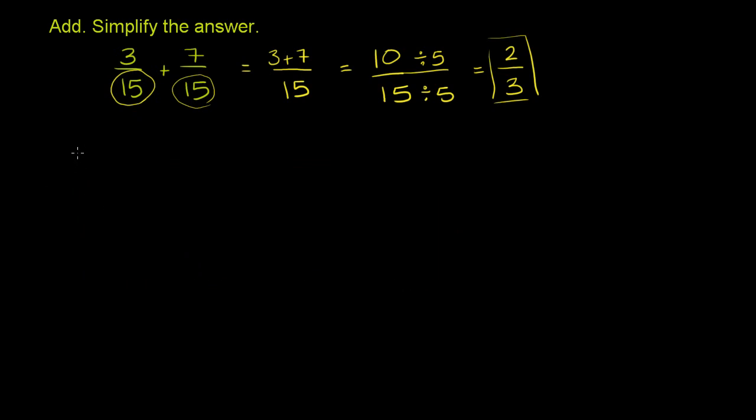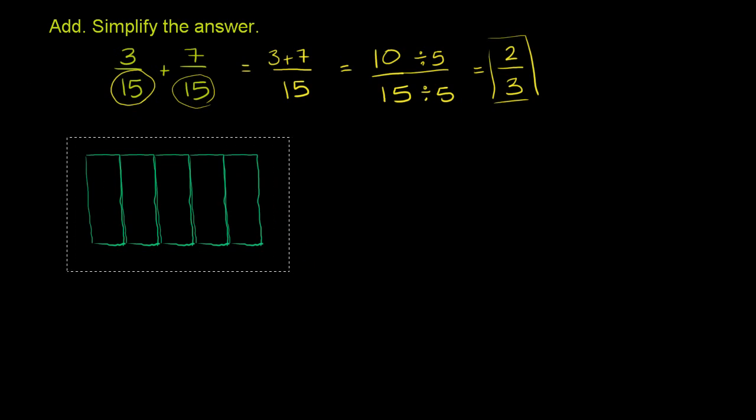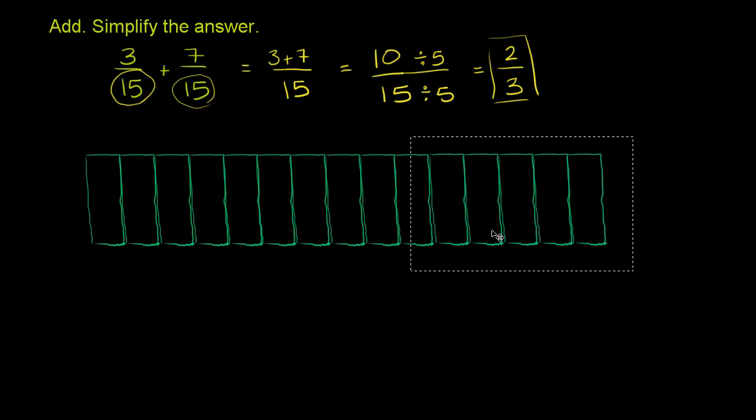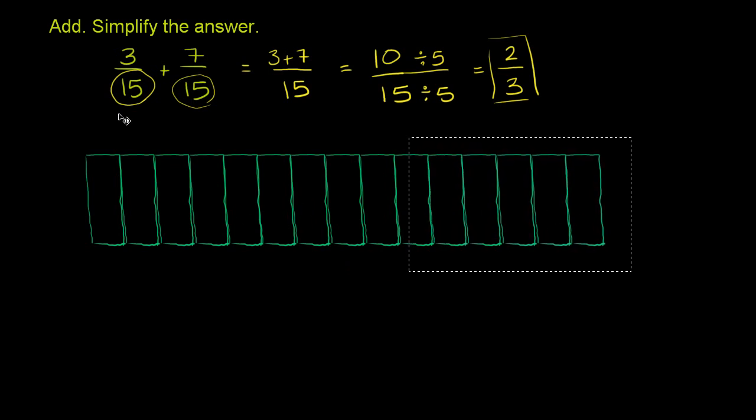So let me draw, so that is one section right over there. That is one section, and then if I copy and paste it, that is the second section, and then third section, fourth section, and then we have a fifth section. Let me copy and paste this whole thing, so that's five sections right there. Let me copy and then paste that. So that is 10 sections. And then let me do it one more time. So that is 15 sections. So you can imagine this whole thing is like a candy bar or something, and we have now split it up into 15 sections.